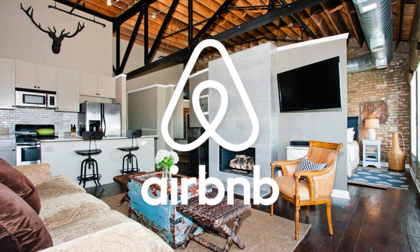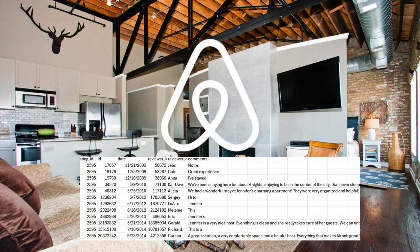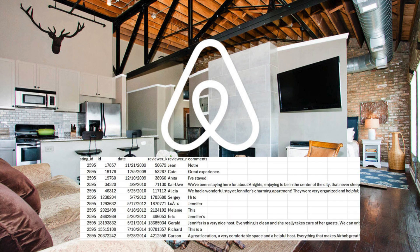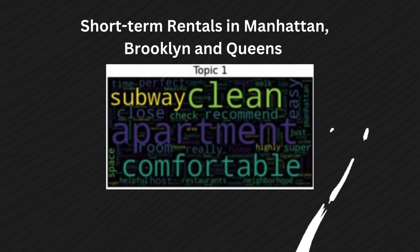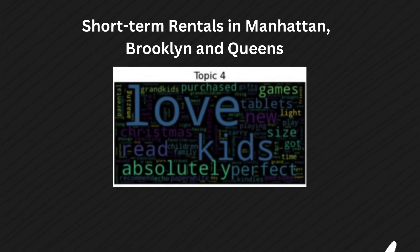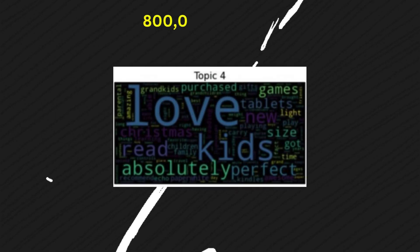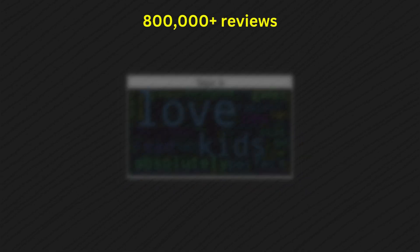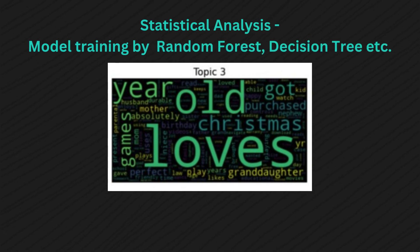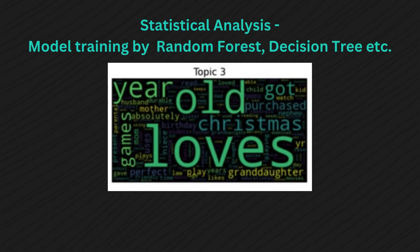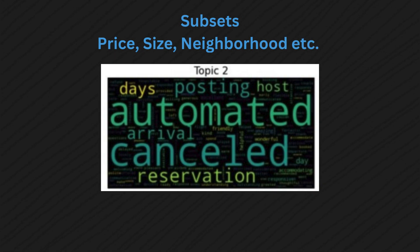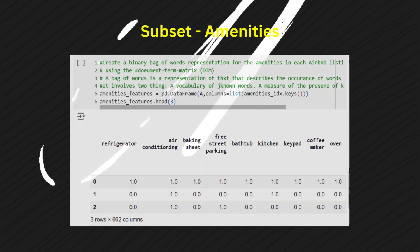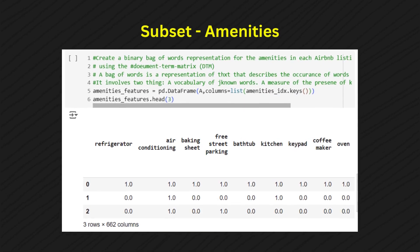Airbnb publishes its data online for analysts to massage, reconfigure, and publish. We'll use data from reviews of New York City Airbnb properties to show how it looks. These word clouds come from an analysis of more than 800,000 records. They differ because we apply different statistical tools. We could also ask it to analyze subsets by variables like neighborhood, price, number of rooms, and use code to apply filters before making the word cloud.